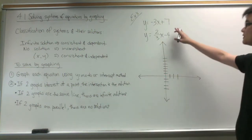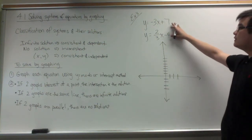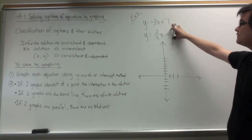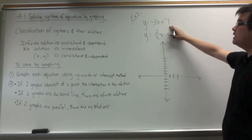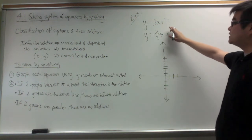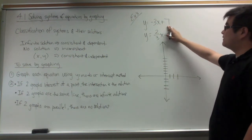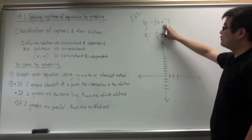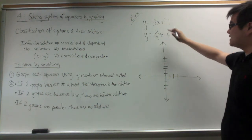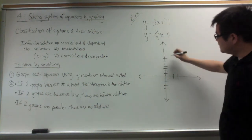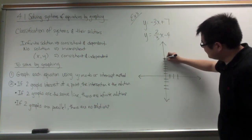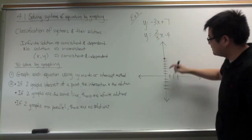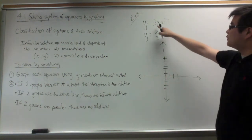In our first example, we have two equations that are in slope-intercept form. I am going to graph the first one. To graph an equation in slope-intercept form, you graph the y-intercept first. The y-intercept here is positive 7, so I am going to graph positive 7, going up 7 spots from the origin.